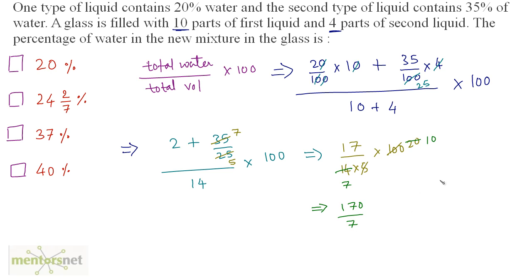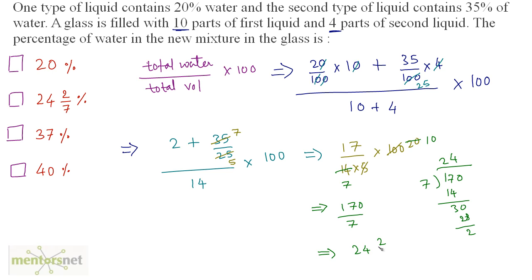Dividing 170 by 7: 7 × 2 = 14, remainder 30; 7 × 4 = 28, remainder 2. So this is equivalent to 24 and 2/7 percent. That is the answer — Option B.